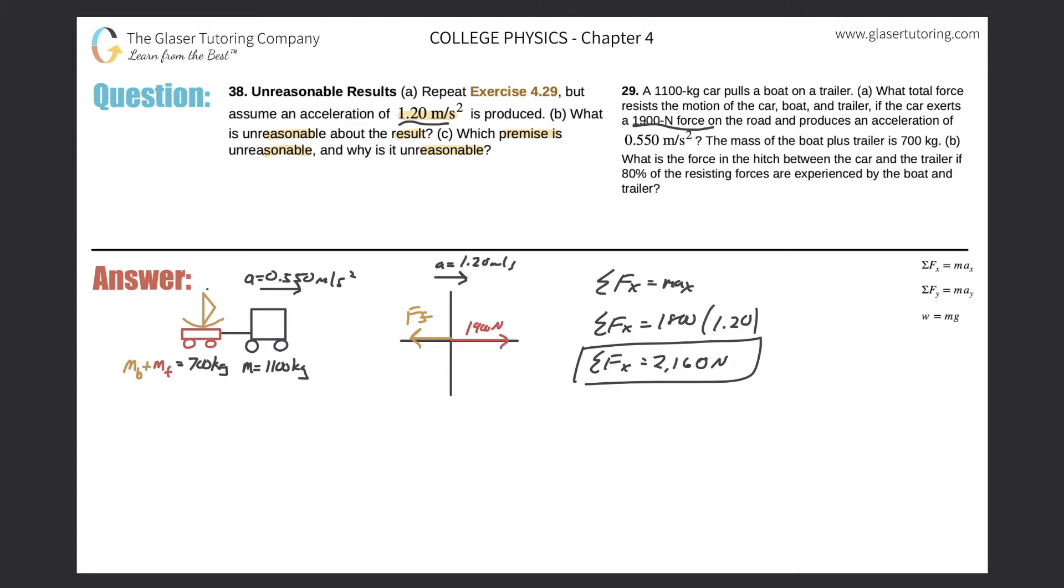So already we can see a problem. Just think about this for a second. The total force that's needed to accelerate this system to the right at an acceleration of 1.2 meters per second is this value of 2160 newtons. But what is the force that the car applies? It only applies 1900 newtons. So wait a minute, in order to reach this acceleration for this mass I need a little over 2000 newtons, but the car is going to produce only 1900 newtons.